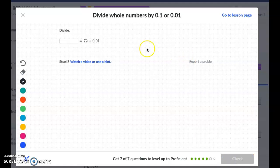72 divided by one-hundredth. So if you have 72 pizzas and you split them into 100 pieces each, we're going to bump that decimal two places over and then fill in our empty spots with zeros. So 7,200.